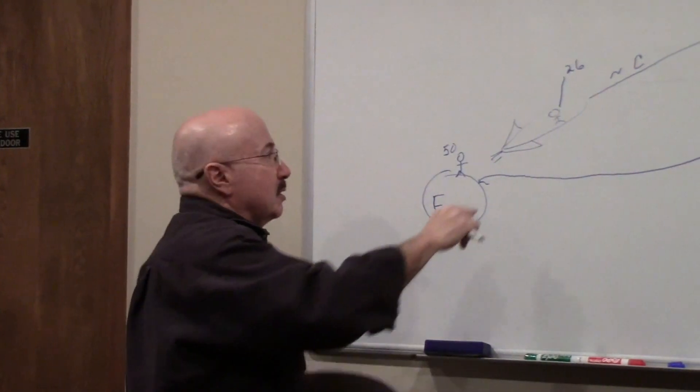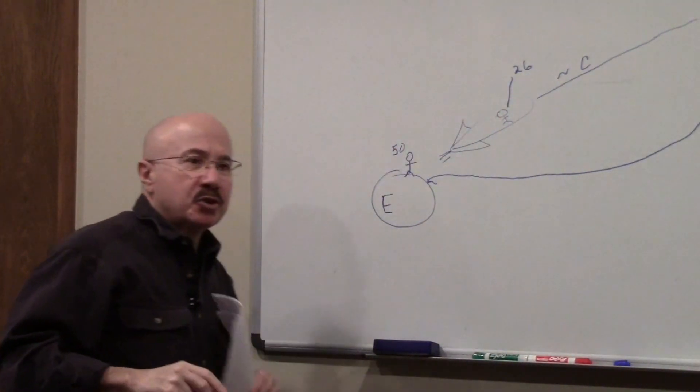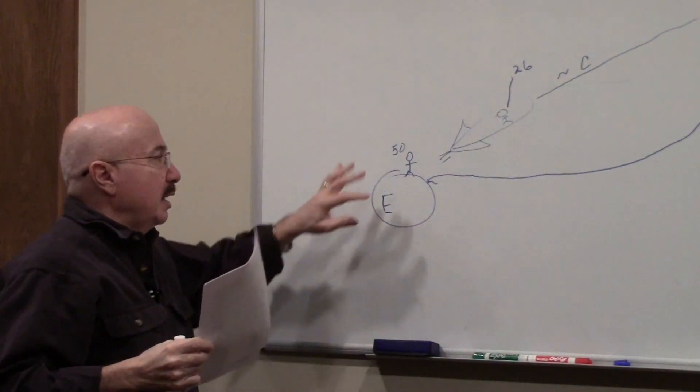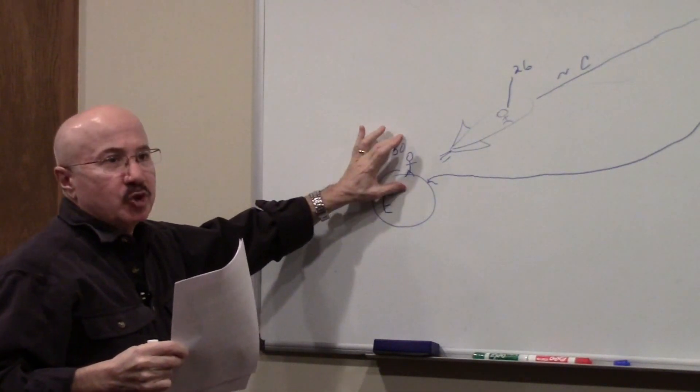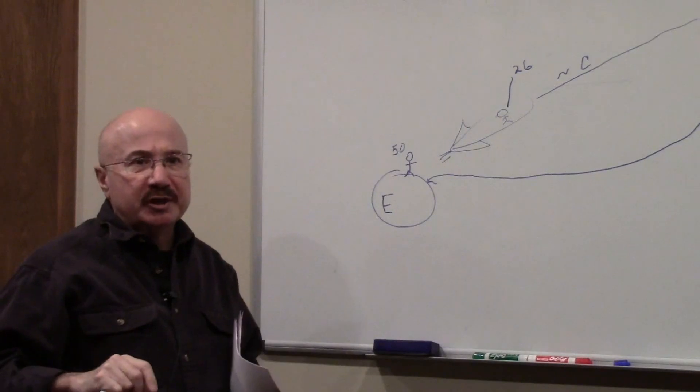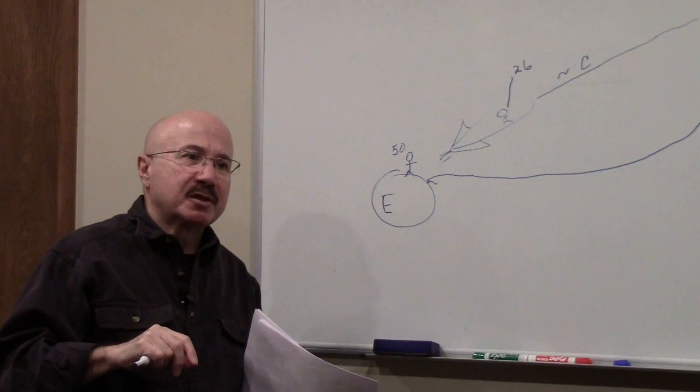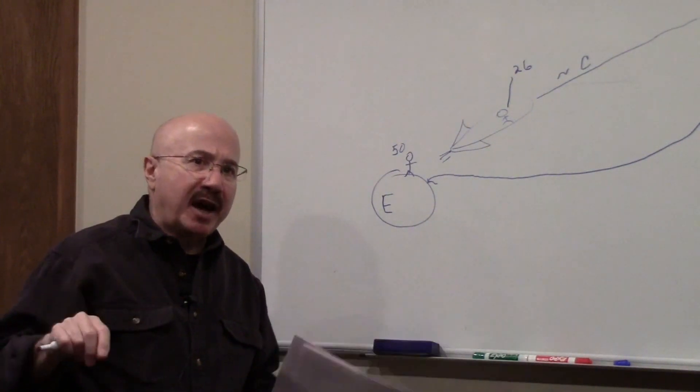What happened is time moved very slow for you because you were moving close to the speed of light and time moved normally for your twin. This has been proven in particle accelerators. The twin paradox is a science fact.